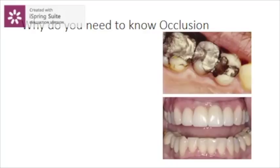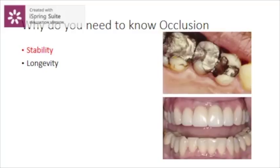Good occlusion gives you stability. Stability means less changes in occlusion over time, which provides longevity of your restoration. If you continuously produce long-standing restorations, you are able to predict how long a material or restoration will last. Once you have that predictability, it increases your confidence, and when you can predict outcomes for patients, they have better confidence in you as the operating dentist. That is the core reason why as a clinician you should know occlusion.